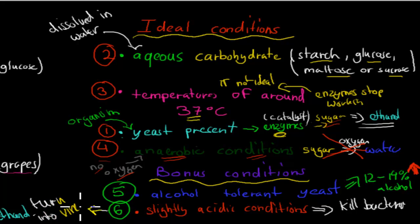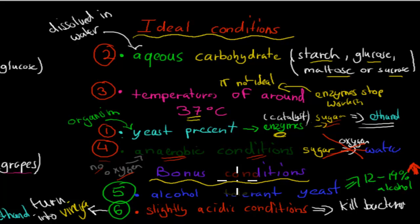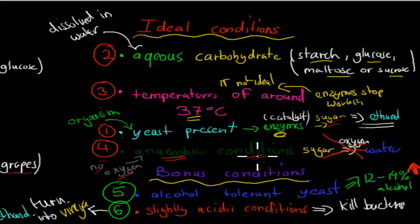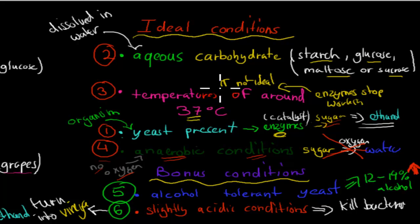Conditions five and six are particularly important for large brewing companies. Overall, the four most important conditions are: yeast present, aqueous carbohydrates, temperature of around 37 degrees Celsius, and anaerobic conditions. These are the descriptions of the ideal circumstances for fermentation of sugars — which is exactly what the dot point asks us to describe.